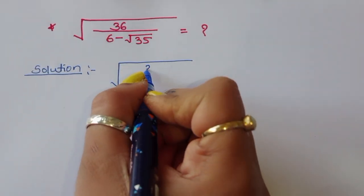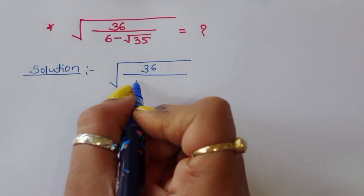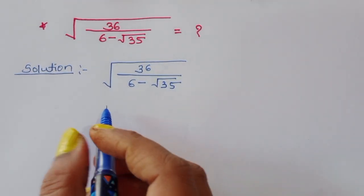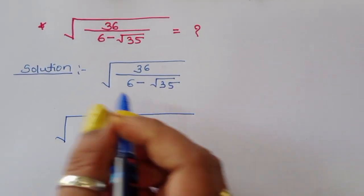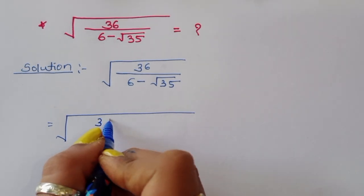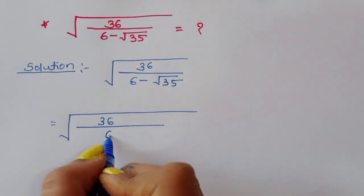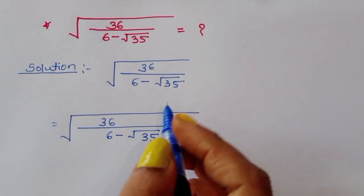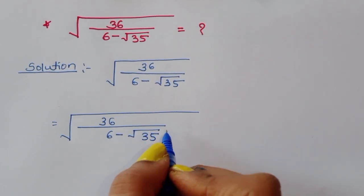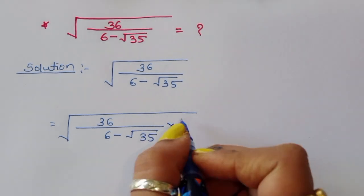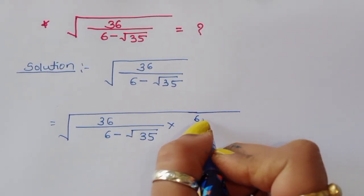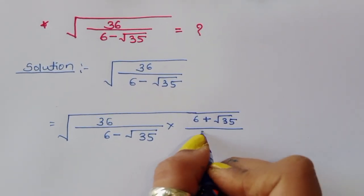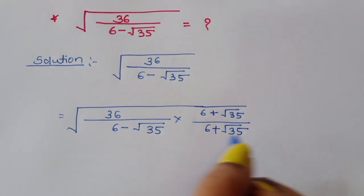Solution: we have square root of 36 divided by (6 minus square root of 35). To solve this, we rationalize — multiply numerator and denominator by (6 plus square root of 35).